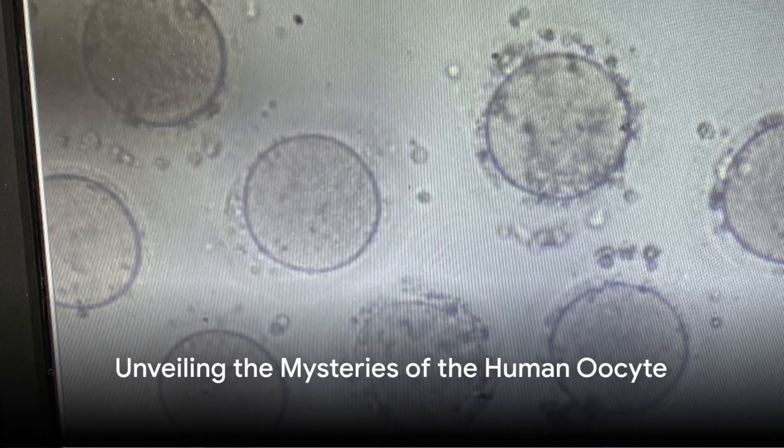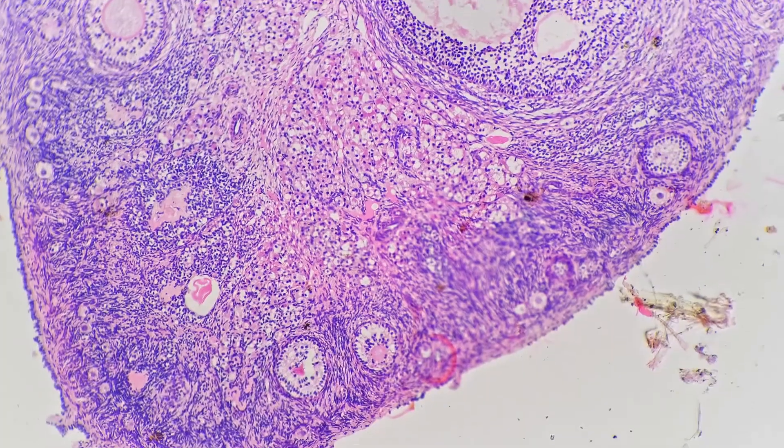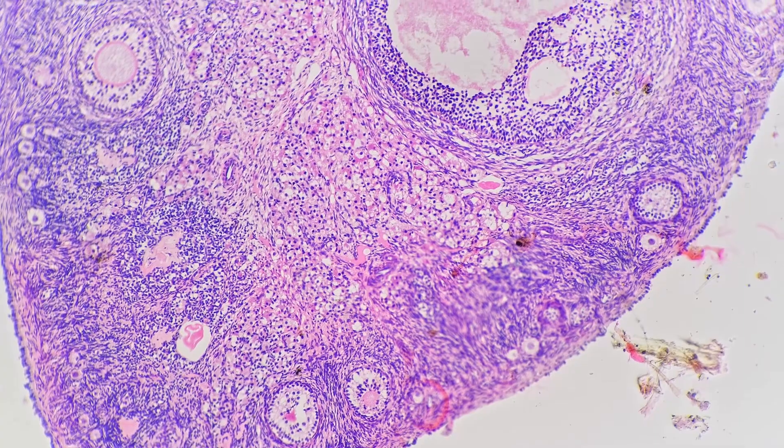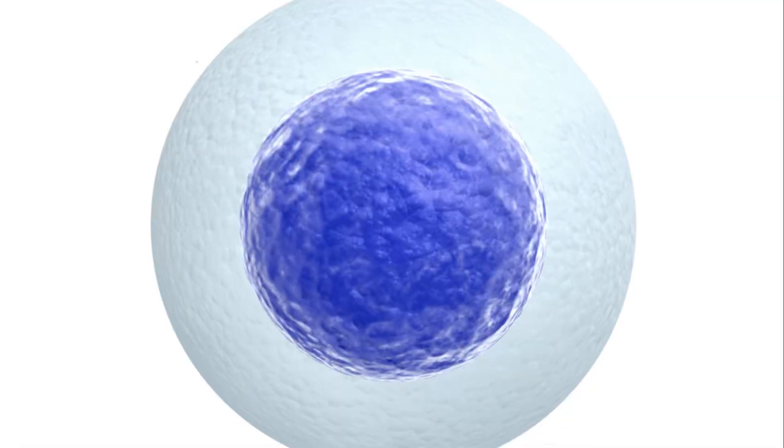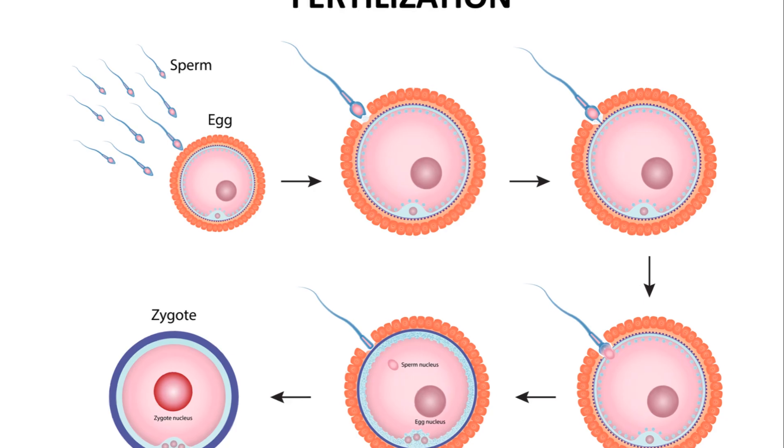Imagine a world of microscopic miracles where life begins. There's a star player in this world: the human oocyte. This dainty cell, commonly known as the egg, is the largest in the human body. At birth, a female carries her lifetime supply of oocytes.